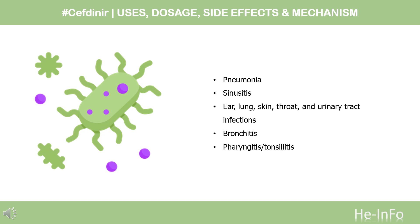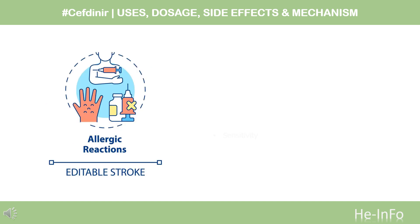Various beta-lactamase-producing organisms may be treated as indicated in certain sections. Contraindication: Cefdinir is contraindicated in patients with a known history of cephalosporin hypersensitivity or cephamycin hypersensitivity. Cefdinir should be used cautiously in patients with hypersensitivity to penicillin, as the structural similarity between cefdinir and penicillin means cross-reactivity can occur.